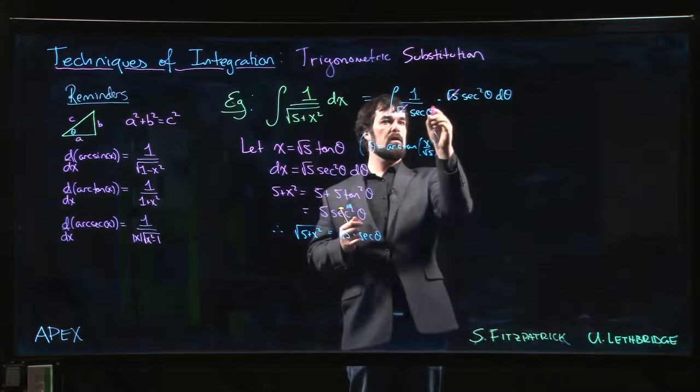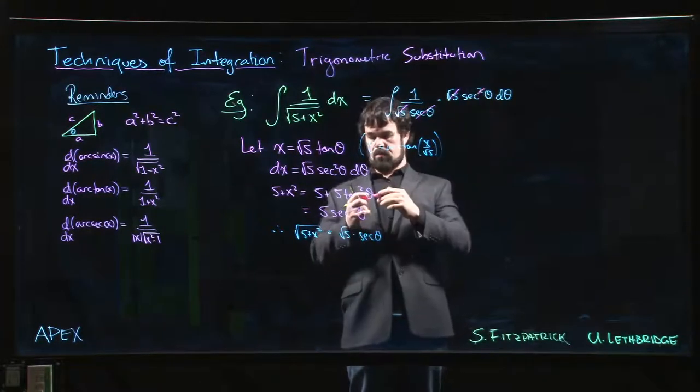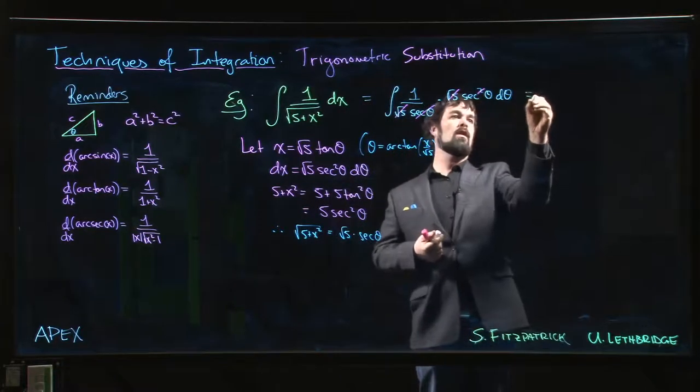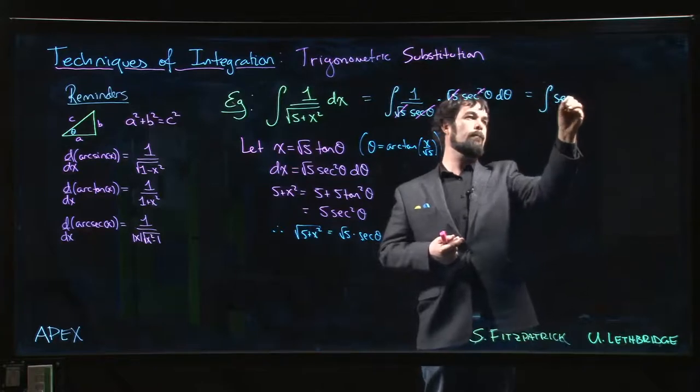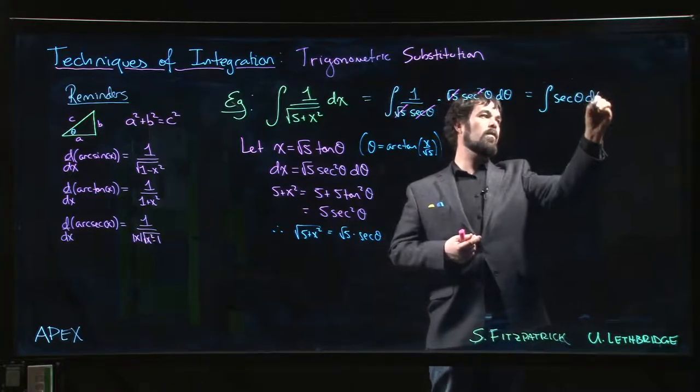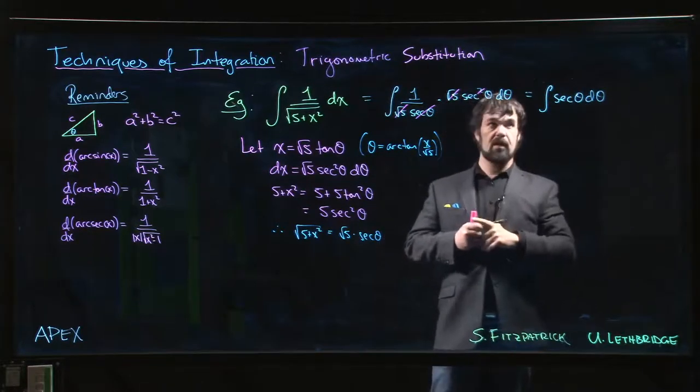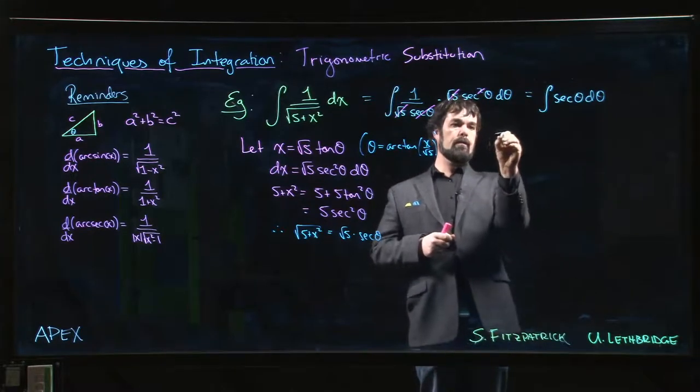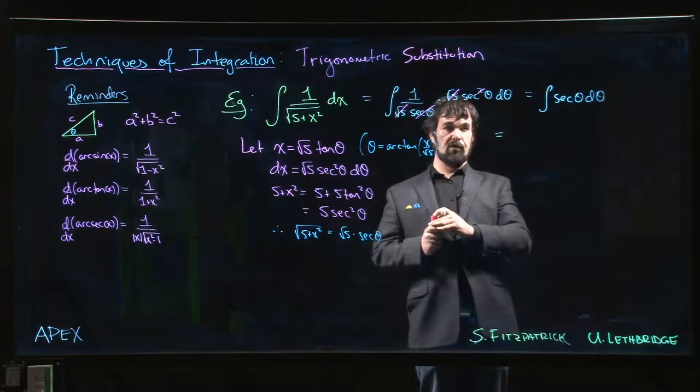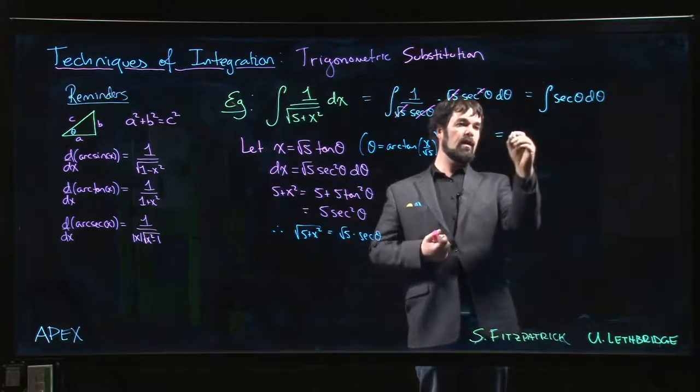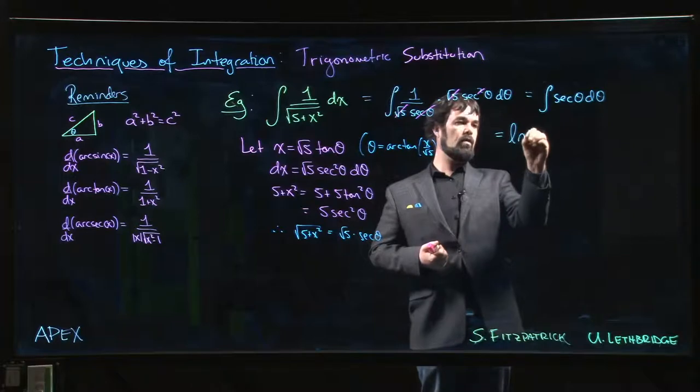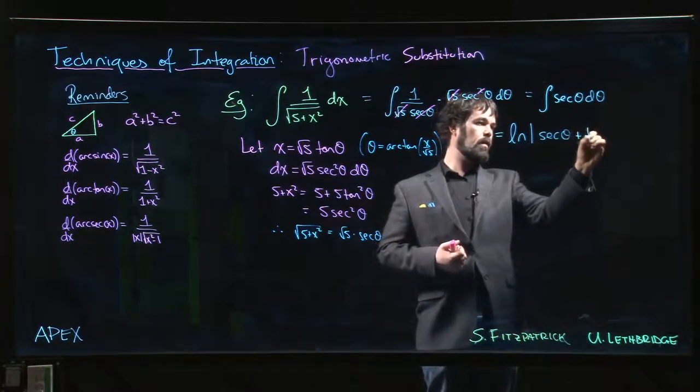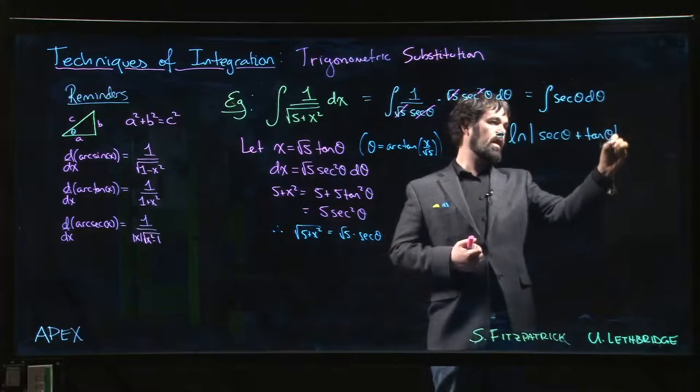Cancel the roots, cancel that secant with one of the two in the numerator. We have secant theta d theta. All right, so we might remember that one. We did this one in the section on substitution. The integral of secant is the natural log of the absolute value of secant theta plus tan theta.